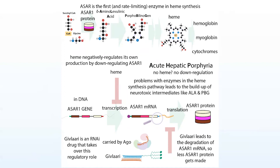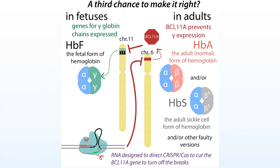There are also complications with getting any drugs to work. For Givlari, for example, it has these sugars that target it to liver cells, which is important for fixing this metabolic deficiency and helping with this disease. You can imagine that if you wanted to target other cells, it could be more complicated. CRISPR is also being used in some therapeutic contexts, and a key example is using it to treat sickle cell anemia and beta-thalassemia.